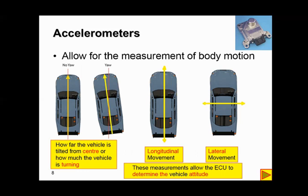Generally what we're talking about here is yaw, how far the vehicle is tilted from center or how much the vehicle is turning, and then longitudinal movement, which is the car accelerating and decelerating in a straight line, and then we measure sideward motion of the vehicle or lateral movement, where we measure how far the vehicle or how quickly the vehicle is moving from side to side. These measurements allow the ECU to determine the vehicle attitude under pretty much any driving condition.